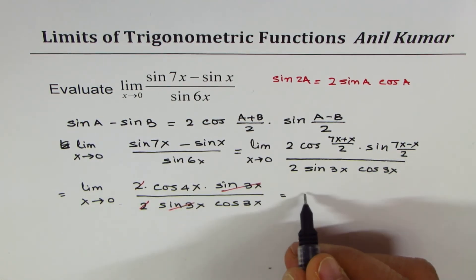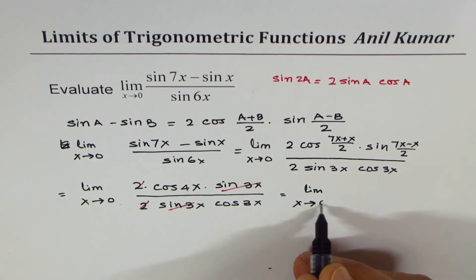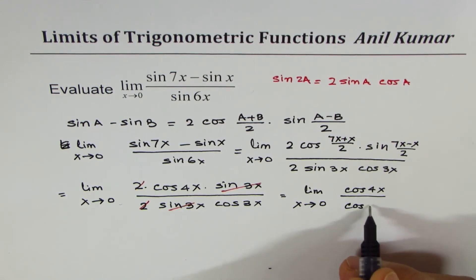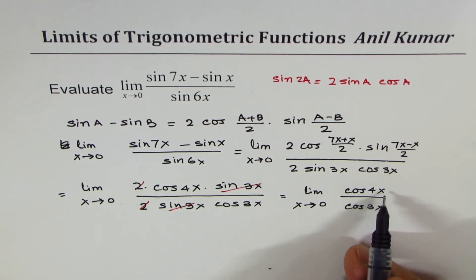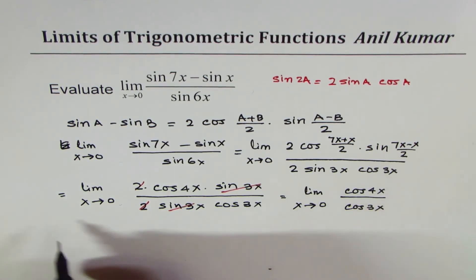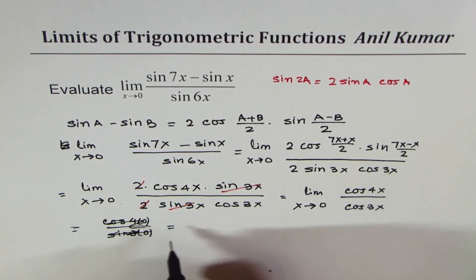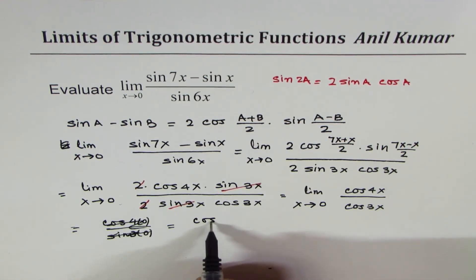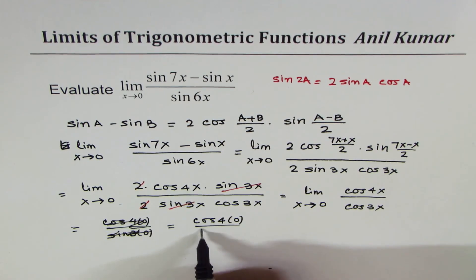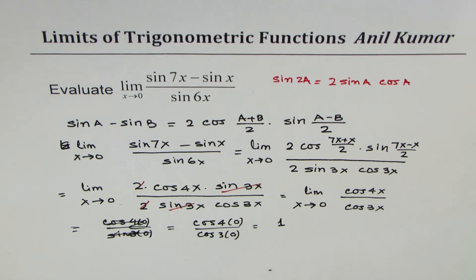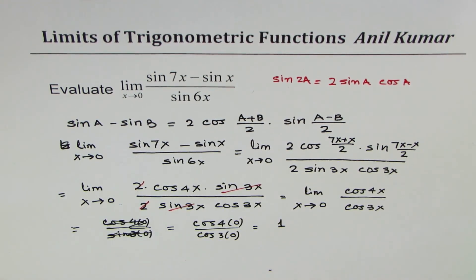You are left with limit x approaches 0 of cos 4x divided by cos 3x. You know cos 0 is 1, so now you can substitute 0. You get cos 4 times 0 divided by cos 3 times 0, which is 1, since cos 0 is 1. That is how you can find the limit of this particular function.